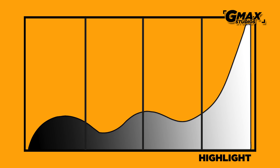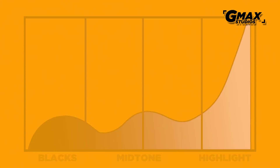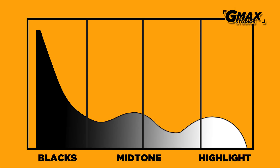So the histogram in effect is a graph which shows us the distribution of the highlights, mid-tones, and blacks in any given photograph or scene. So depending upon the photographic situation, we should try to the best of our ability